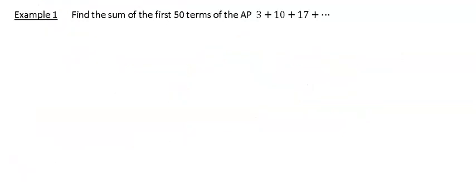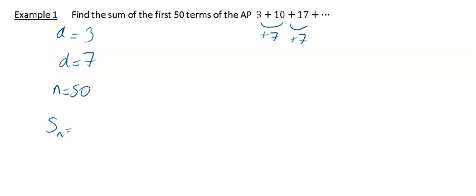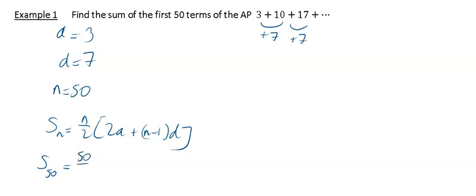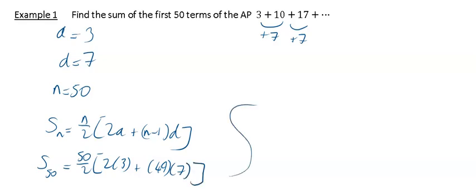Example: find the sum of the first 50 terms of the AP 3, 10, 17, ... Here A = 3, D = 7, and N = 50. Using S_N = N/2 × (2A + (N − 1)D): S_50 = 50/2 × (2×3 + 49×7). Evaluating on a calculator gives S_50 = 8,725.